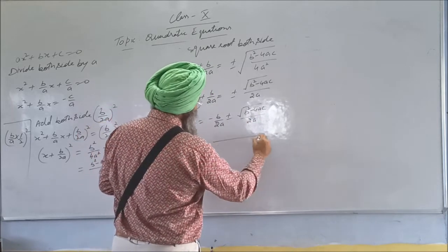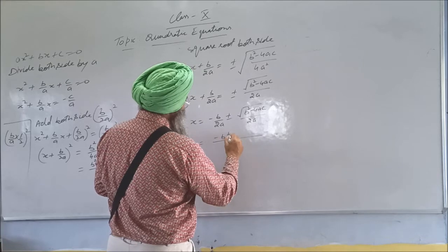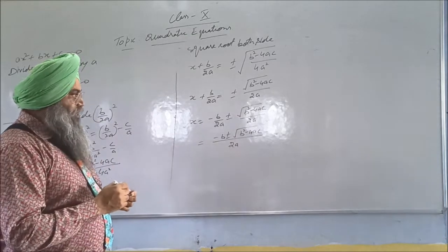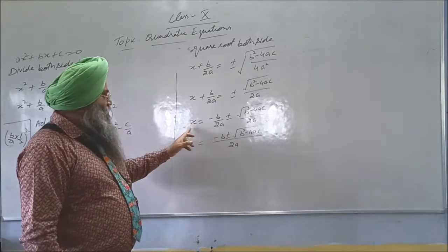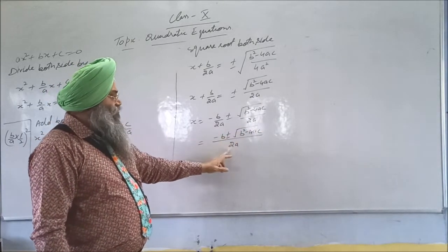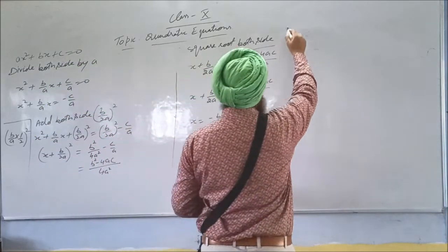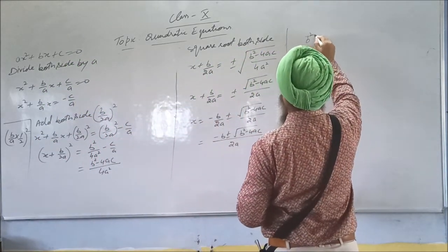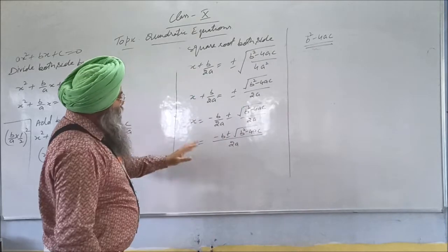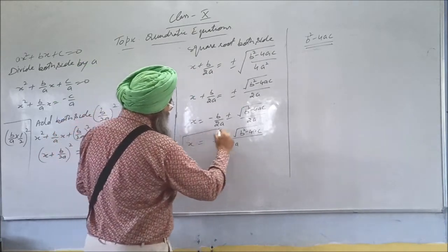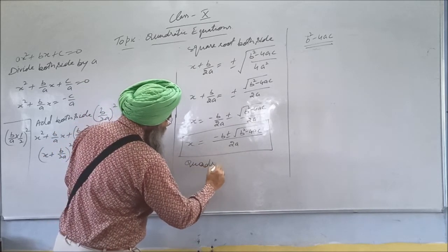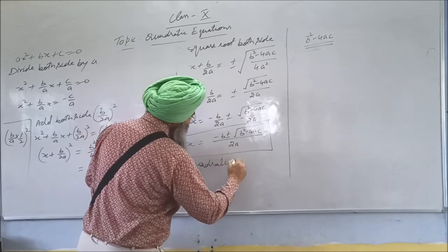We get: x plus b upon 2a equals plus minus square root of (b squared minus 4ac) upon 4a squared. The square root of 4a squared is 2a. Now shift the b upon 2a to the right hand side, and we get: x equals minus b plus minus square root of (b squared minus 4ac), all upon 2a. This is the quadratic formula.